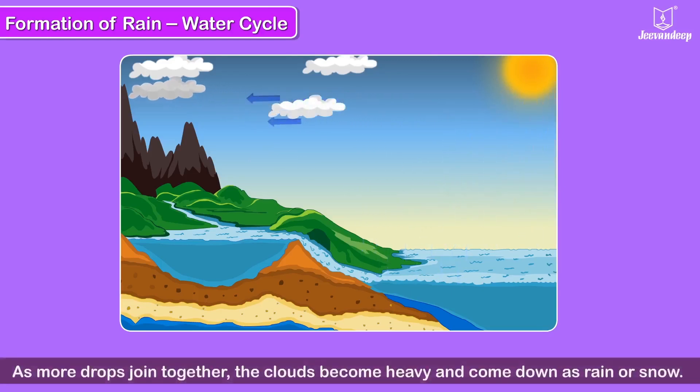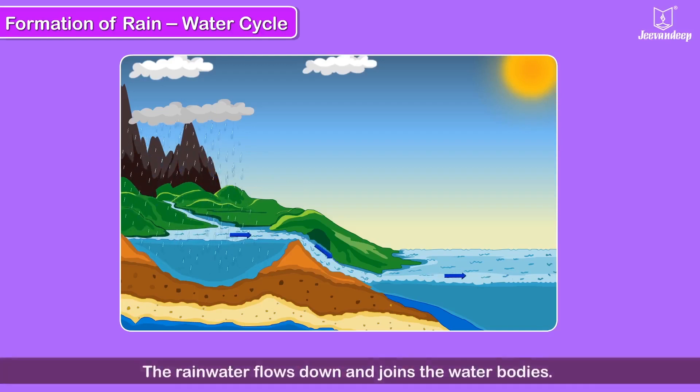As more drops join together, the clouds become heavy and come down in the form of rain or snow. The rainwater flows down into the rivers, lakes, seas, and oceans.